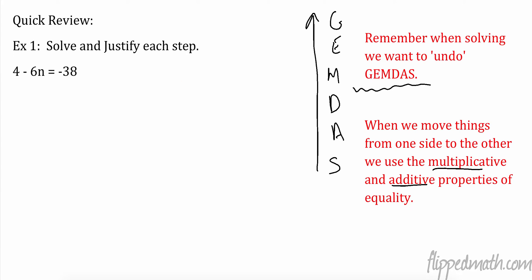So let's take a look. First thing, I'm going to circle this variable right here — n. I want to get n by itself. What operations and numbers are bothering n? Well, 4 is bothering n. It's a positive 4, which means it's being added.